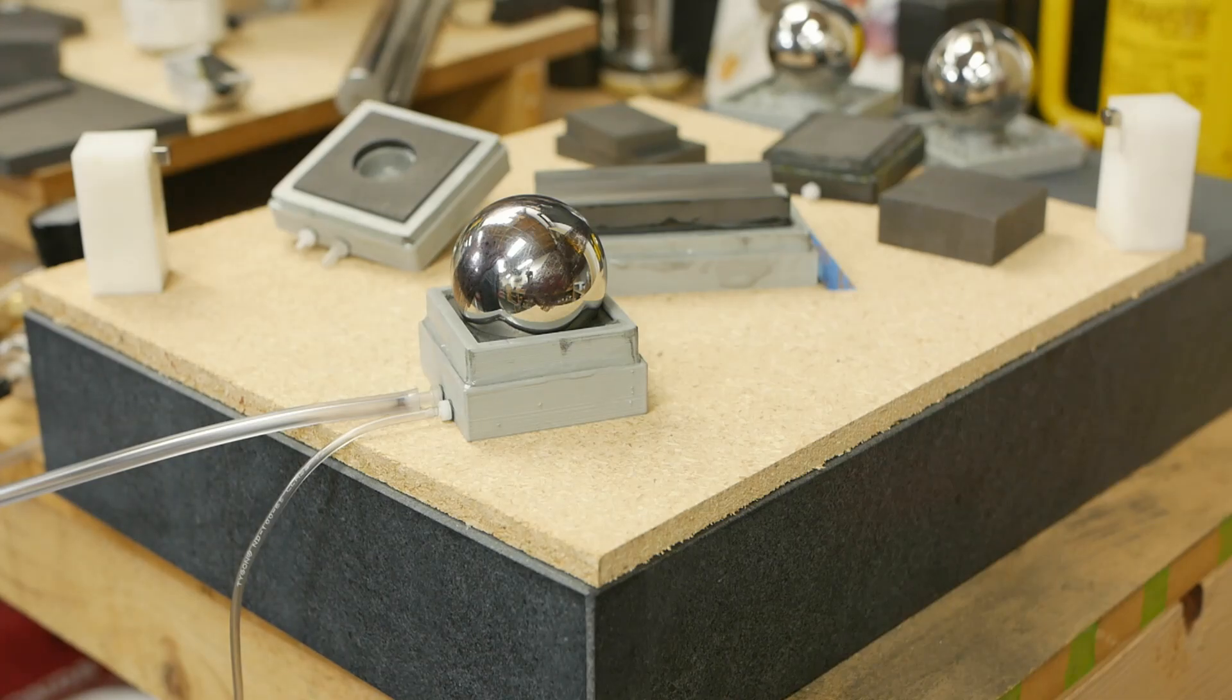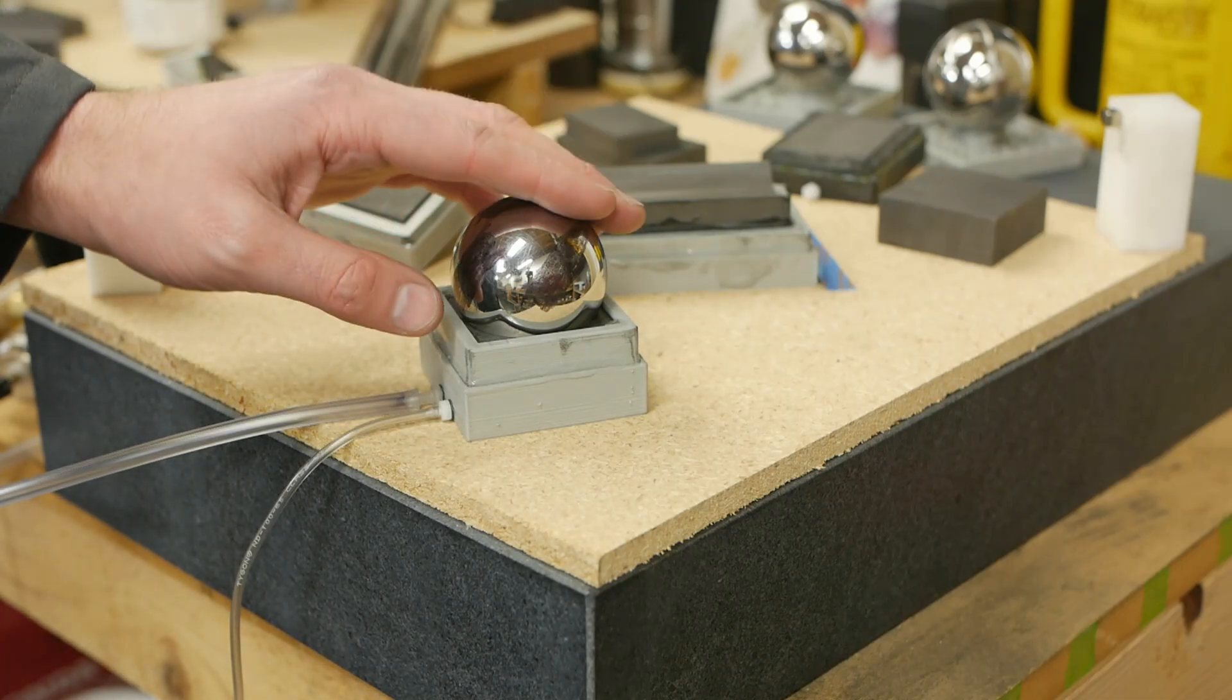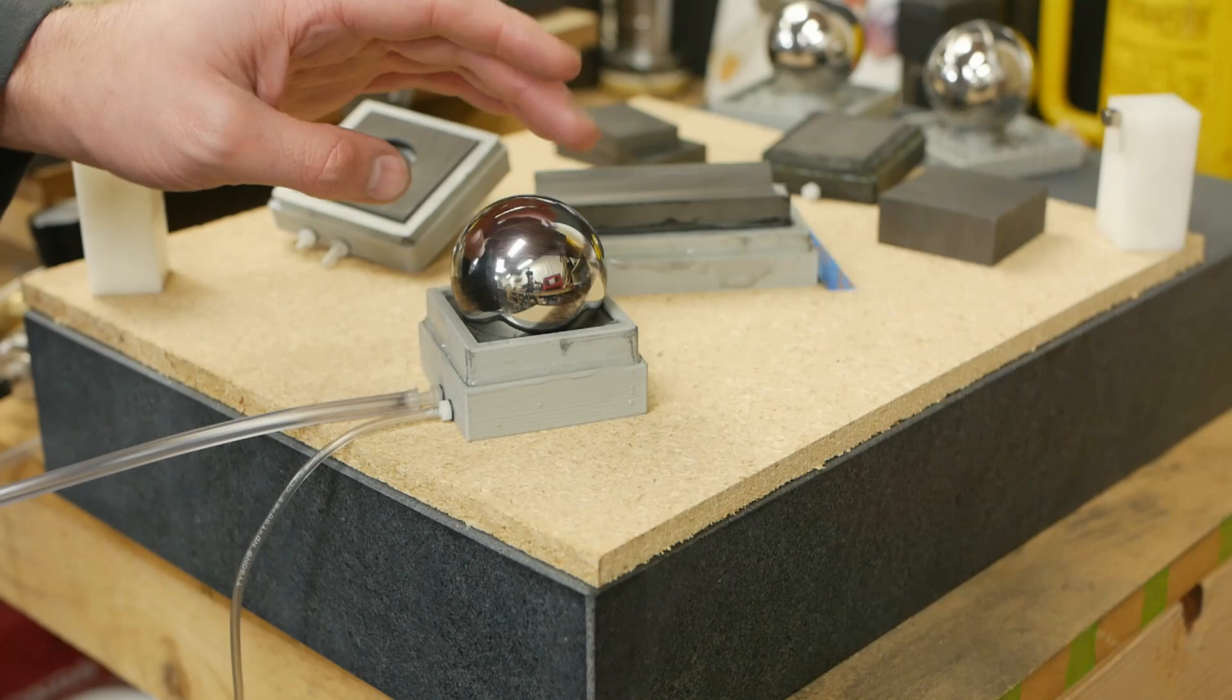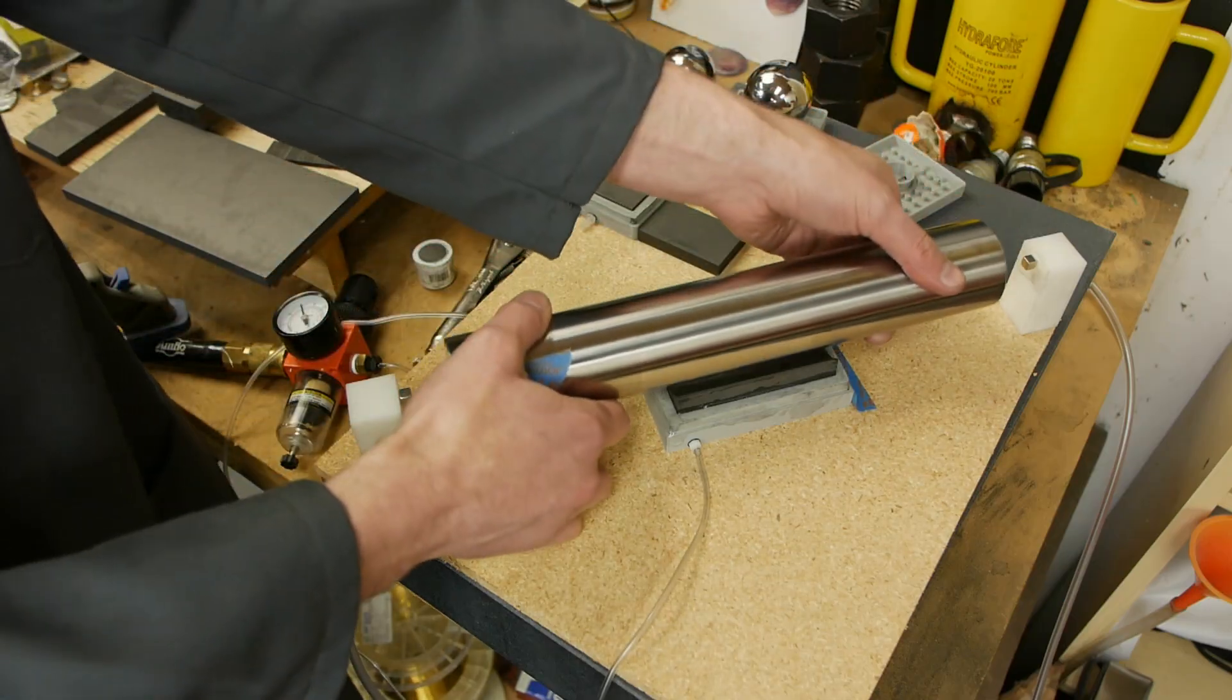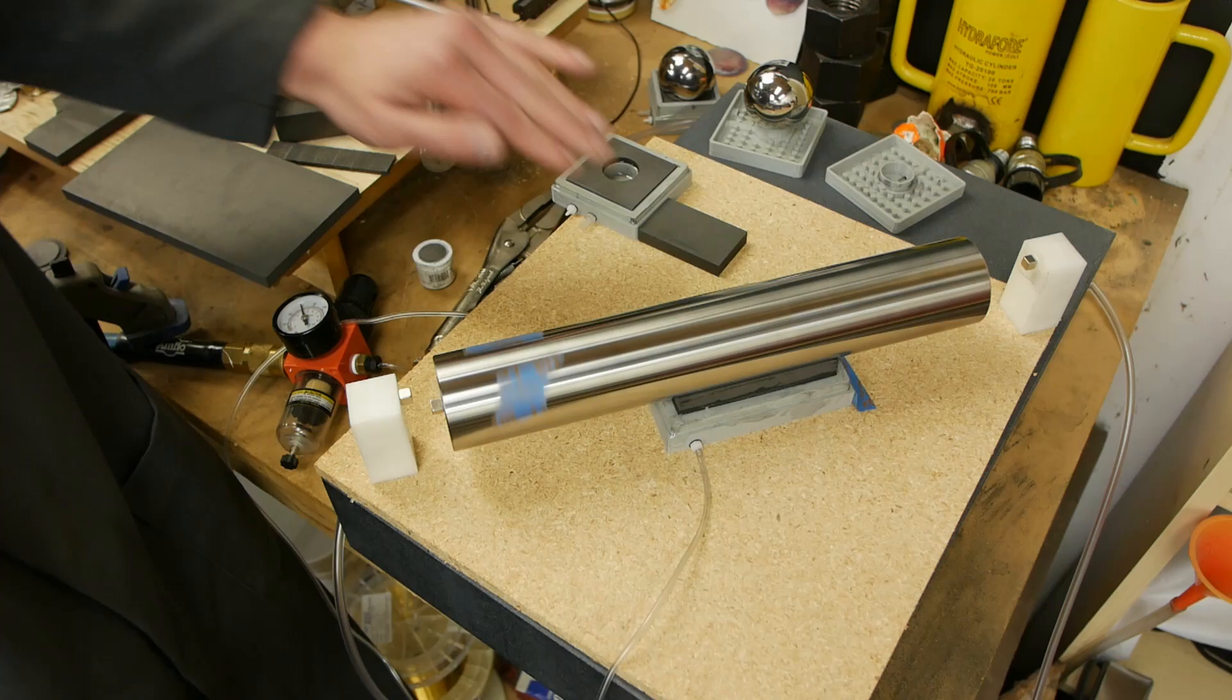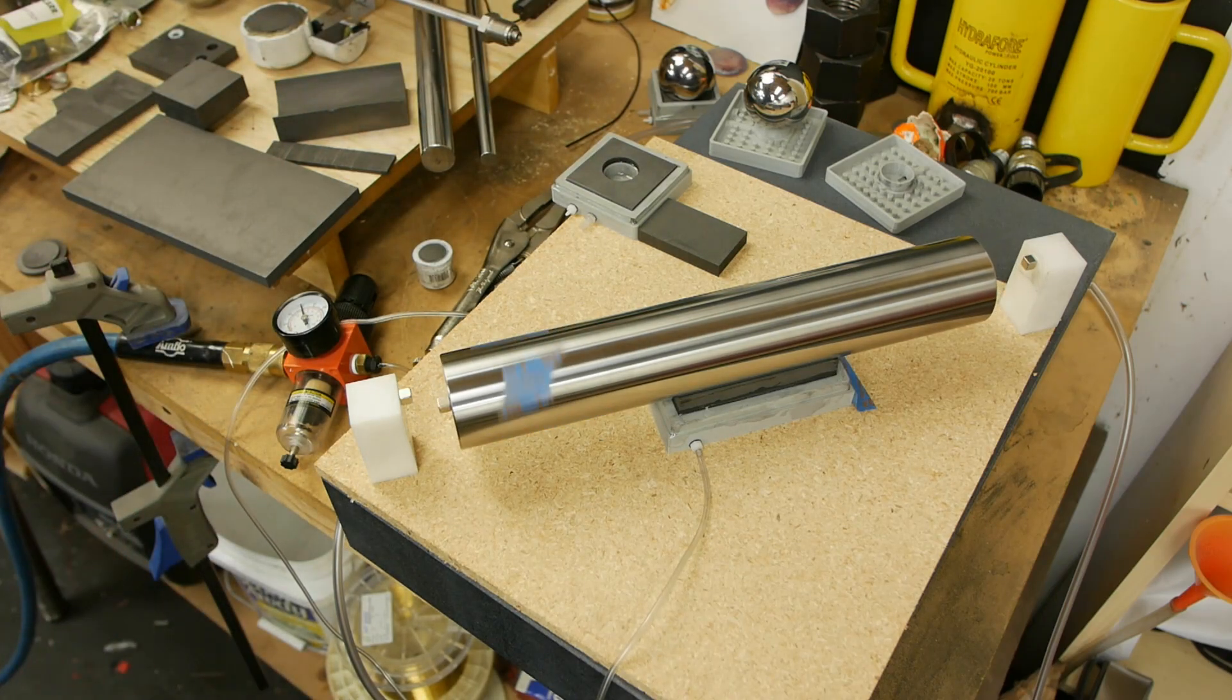Today on Applied Science we're going to talk about air bearings. These are kind of like an engineering cheat code because you get so much for so little. The parts cost is only a few dollars and I'm going to show you in today's video how to build these without any special tools.